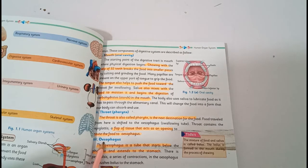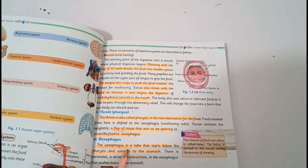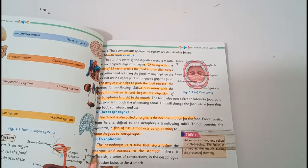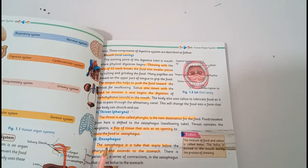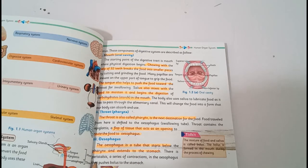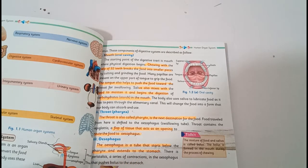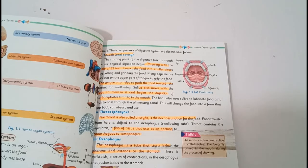The next destination is esophagus. Food goes through the throat to the esophagus, which extends to the stomach. There is peristalsis, a series of contractions in the esophagus, that pushes bolus to the stomach.